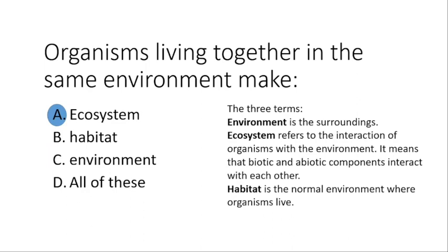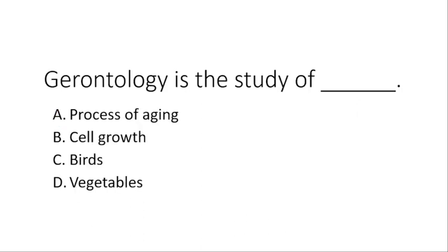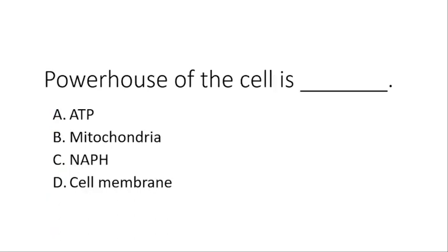Organisms living together in the same environment make — the correct answer is ecosystem. These three options can be tricky: environment refers to the surroundings; ecosystem refers to the interaction of organisms with the environment, meaning biotic and abiotic components interact with each other; while habitat is the normal environment where organisms live. Gerontology is the study of — the correct answer is the process of aging.